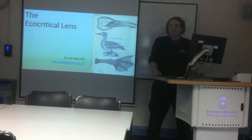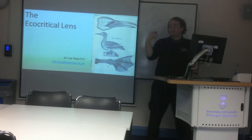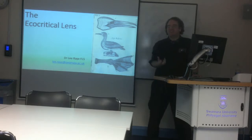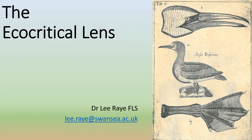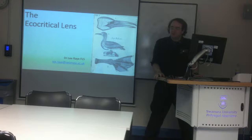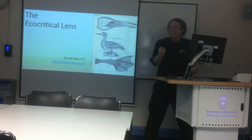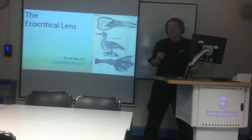Just like the feminist critical lens is based on feminism, the Marxist critical lens is based on Marxism, and the post-colonial critical lens is based on what we understand about the colonial period, the eco-critical lens is based on eco-criticism. We need to understand the basic ideas of eco-criticism before we can apply the lens to our texts.